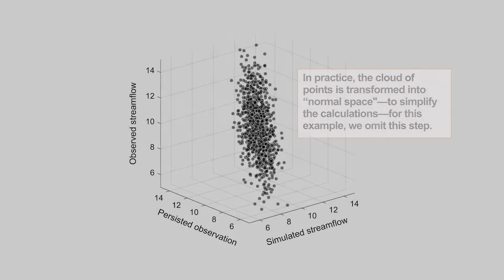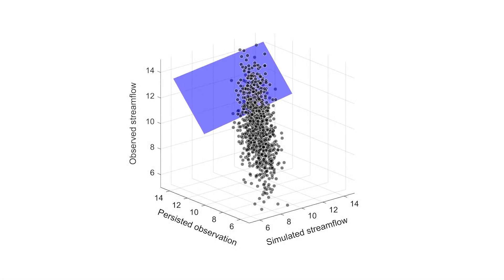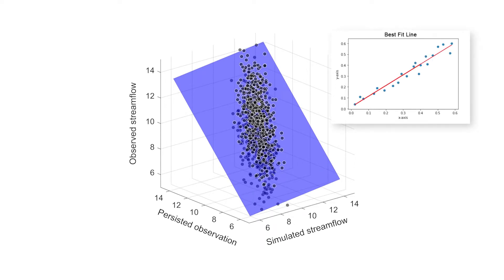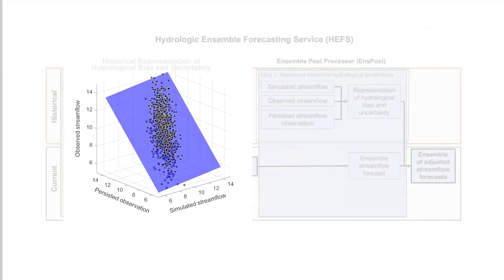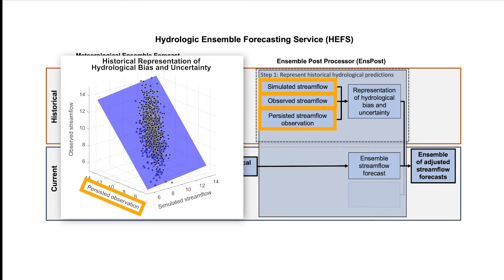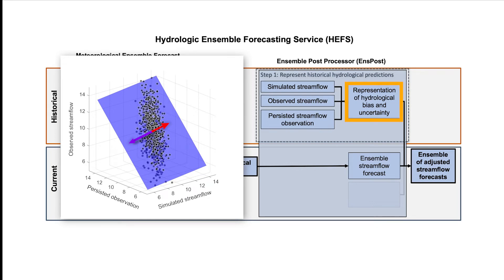To make use of this cloud of points, we fit a plane to it in the 3D space. This is analogous to a best-fit line through a 2D scatter plot, but here we have three variables rather than two. The plane is used to predict the observed streamflow based on the simulated streamflow and the persisted observation, and will be used to account for bias. The scatter of the cloud of points around the plane represents the uncertainty. So now we have a historical representation of hydrological bias and uncertainty.